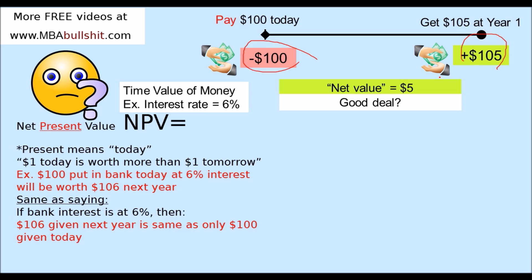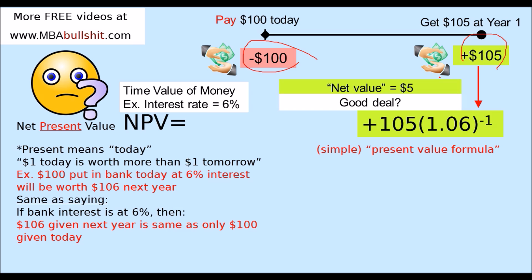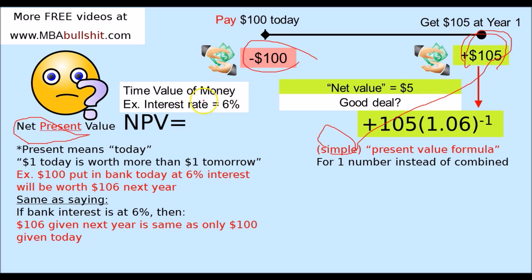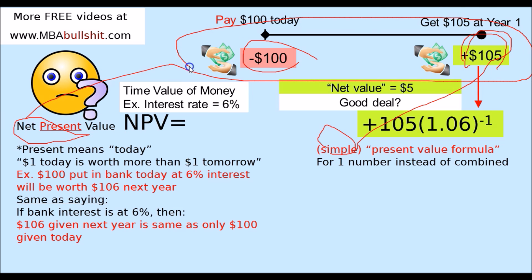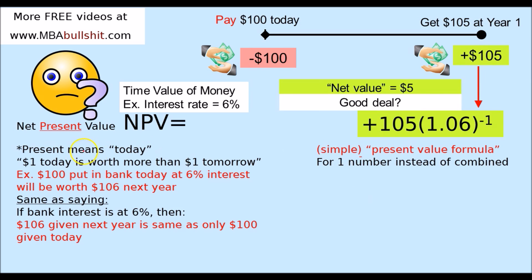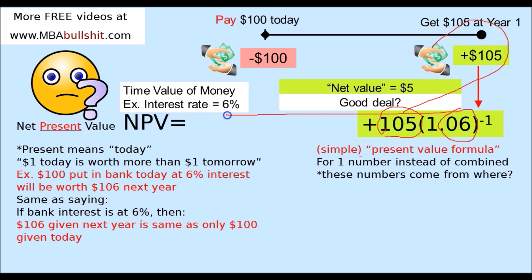It's very simple. The first step is this — the simple present value formula. What makes it different from the net present value formula? Net means a combination of numbers, while the simple present value formula is for one number. So where do these numbers come from? This $105 comes from our example. This 0.06 represents the 6% interest rate. And the negative one represents one year — we're bringing the value backward by one year.